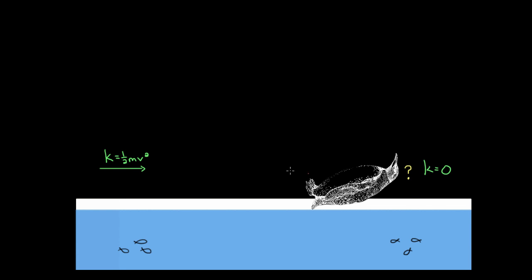Now if you would have asked this question when we dealt with forces, you would have said, well obviously this penguin is coming to a stop because there must be some amount of friction between the penguin and the ice. Maybe the ice is very slippery, but it can't be frictionless, or this penguin would probably keep sliding forever. There might be some air resistance causing the penguin to slow down, but it's probably mostly friction between the penguin and the ice.